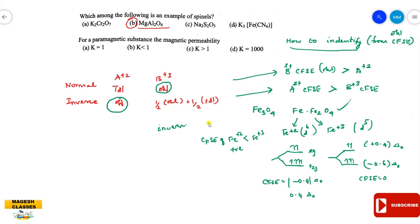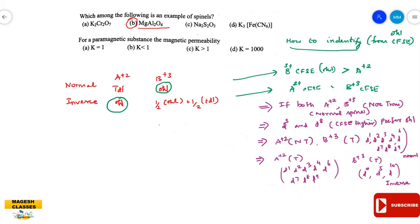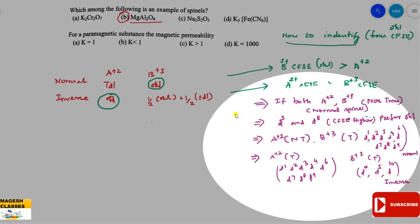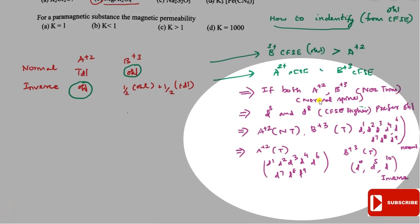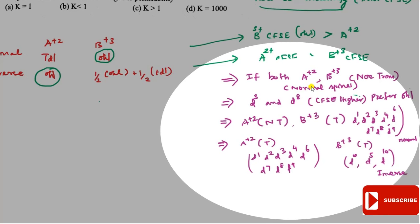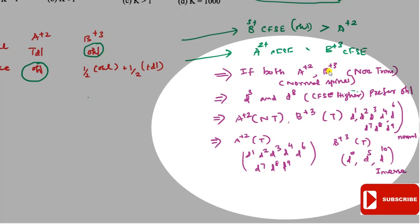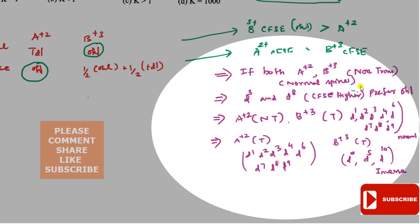Let us come to some conclusions from the CFSE calculations. If we have a dipositive ion and tripositive ions that are non-transition elements, it is the case of normal spinel — because the CFSE of non-transition elements is 0, so it is very small and hence it is normal spinel.